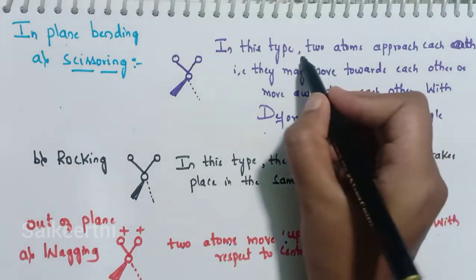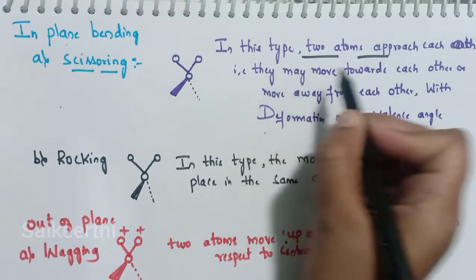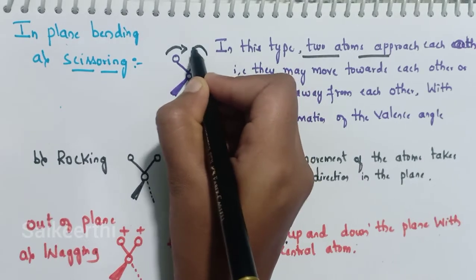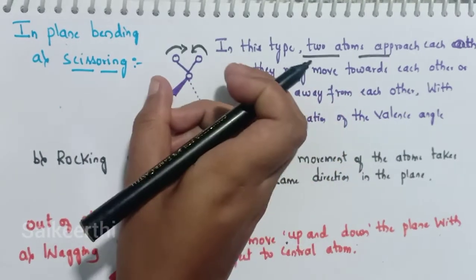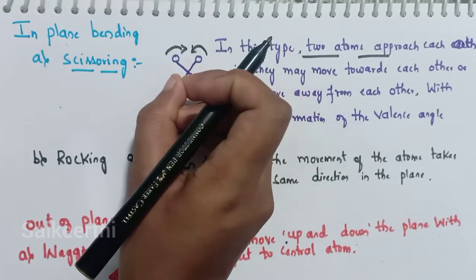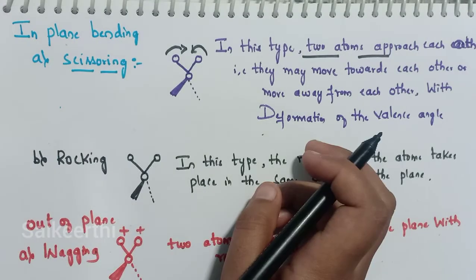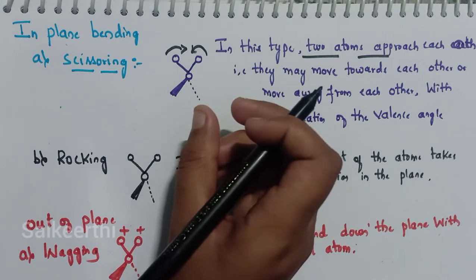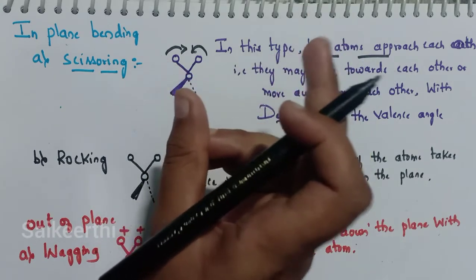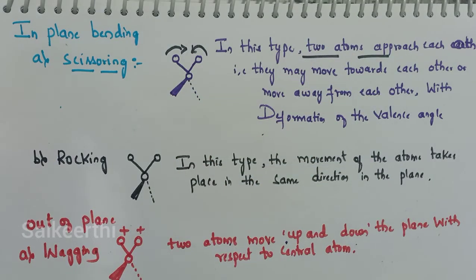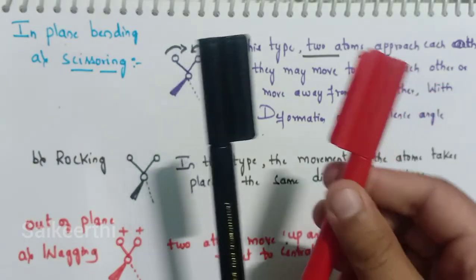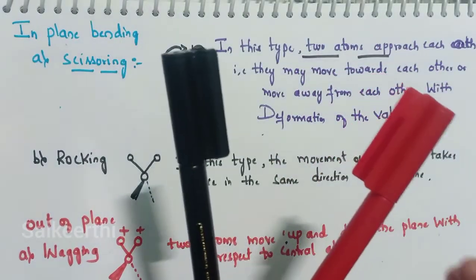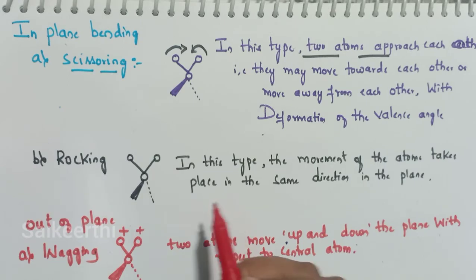In scissoring, the two atoms move towards each other and then away from each other alternately, causing the bond angle to change. When they approach each other the bond angle decreases, and when they move away the bond angle increases. This is the scissoring vibration.